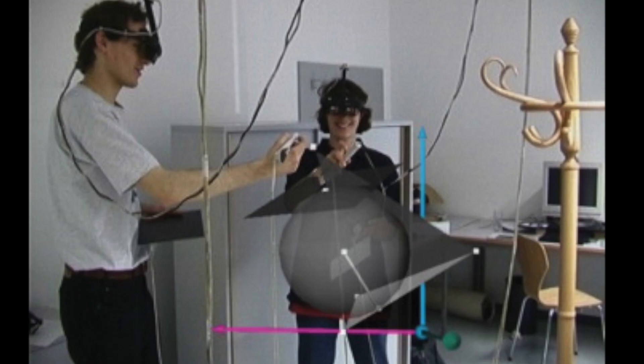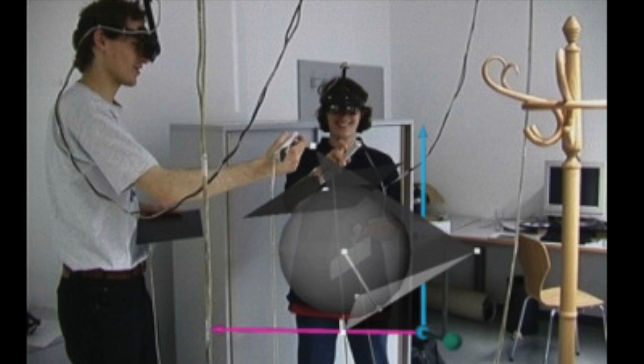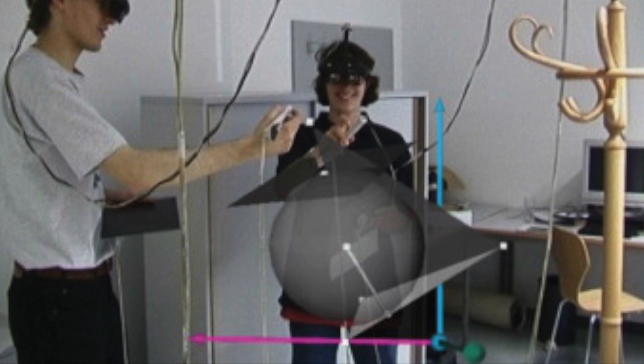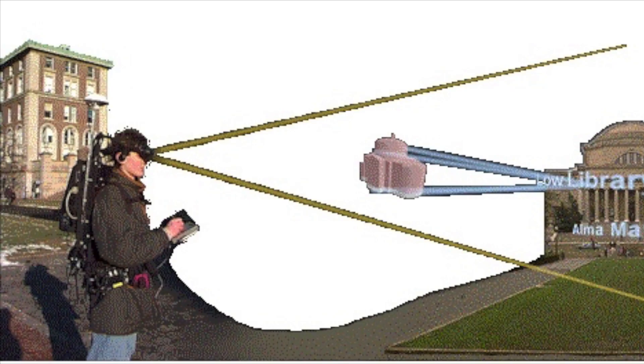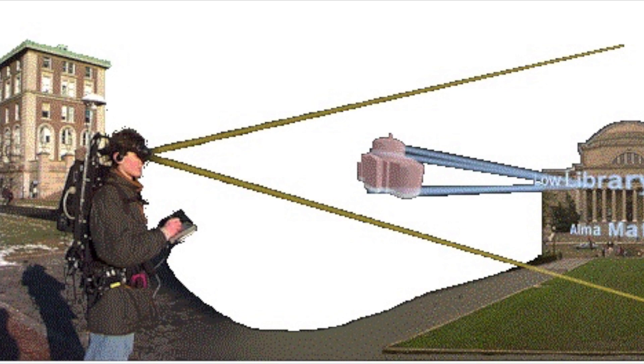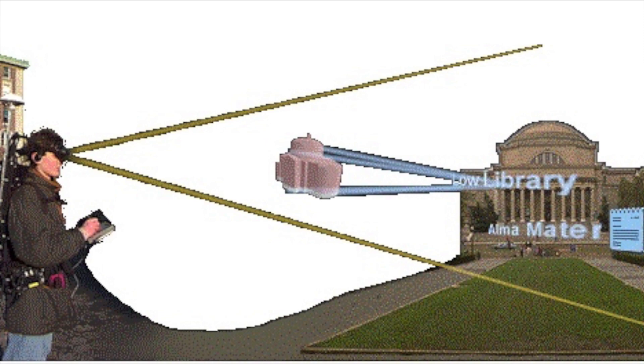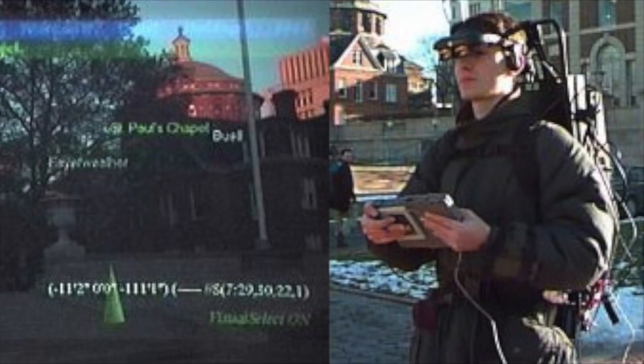One of the showcase applications was a geometry course, which was successfully tested with actual high school students. In 1997, Fenner's group developed the first augmented reality system that could be used outdoors — the Touring Machine at Columbia University. The Touring Machine used a see-through head-mounted display with GPS and orientation tracking. Delivering mobile 3D graphics via this system required a backpack holding a computer, various sensors, and an early tablet display for data input.